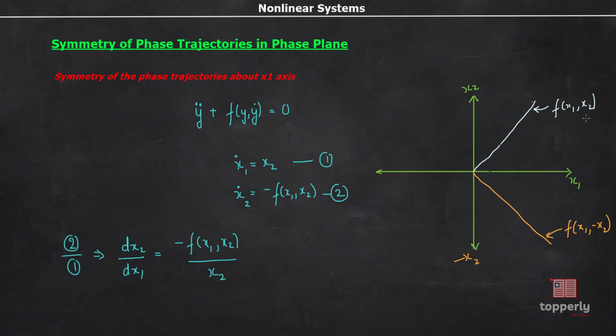Now, taking the slope of this function, we get it as dx2 by dx1 equal to minus f of x1 comma x2 by x2. We have obtained that over here. Now, taking the slope of this graph, dx2 by dx1 equal to minus f of x1 comma x2 by minus x2. This minus is because we are taking about negative x2 axis. Now, by observation, we can see that the slope of these two trajectories should be equal in magnitude but opposite in sign.